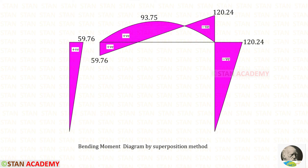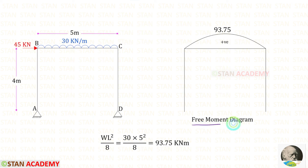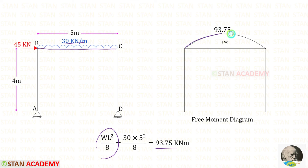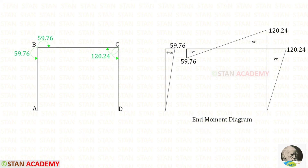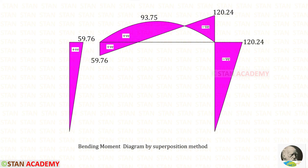Alternatively, we can easily draw the bending moment diagram by the superposition method. For that, first we need to draw the free moment diagram. In beam BC we have a uniformly distributed load of 30 kN/m — using the formula we can find the moment and draw the parabolic diagram. We should not consider the nodal point load of 45 kN. We know that the moment at B is a sagging moment and the moment at C is a hogging moment. Using the direction of arrows we can draw the end moment diagram, where sagging is positive and hogging is negative. Then we combine both diagrams to get the final bending moment diagram.